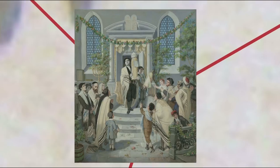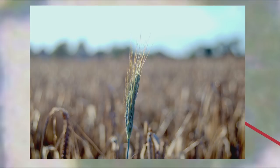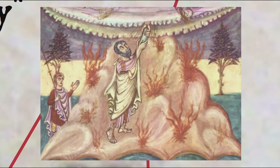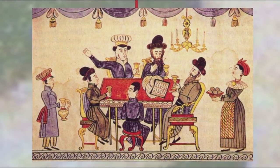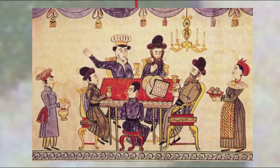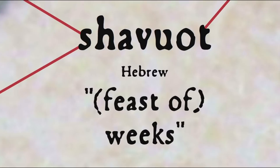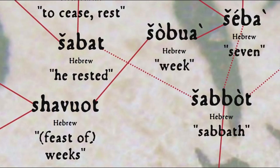Another word at least partly related to this discussion is Shavuot — a Jewish wheat harvest festival that also commemorates God giving the Torah to the Israelites at Mount Sinai. It falls on the sixth day of the Hebrew month of Sivan, seven weeks — a week of weeks — and one day after the first Sabbath of the Feast of Unleavened Bread, and is therefore called the Feast of Weeks. Shavuot is the plural form of Shavuah, which comes from the number seven, Sheba.